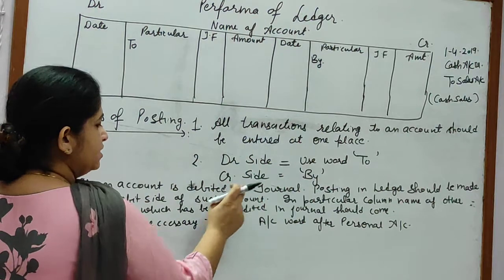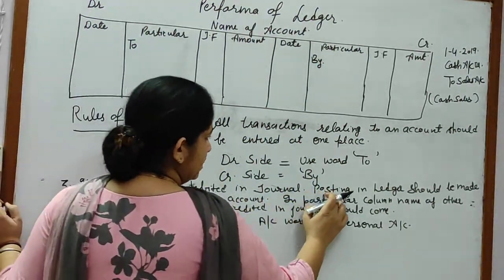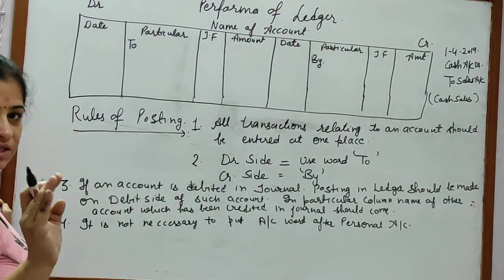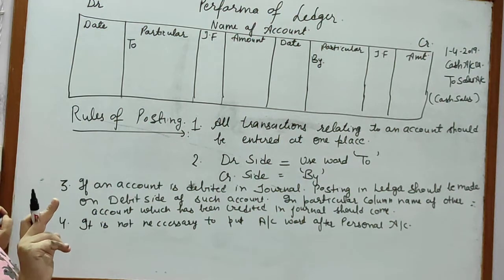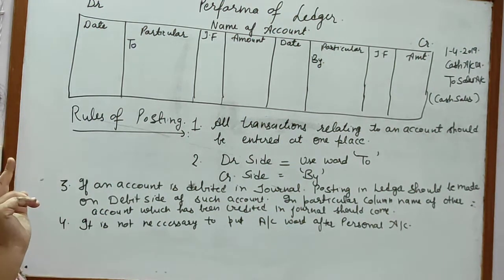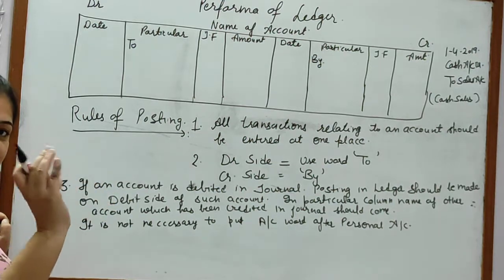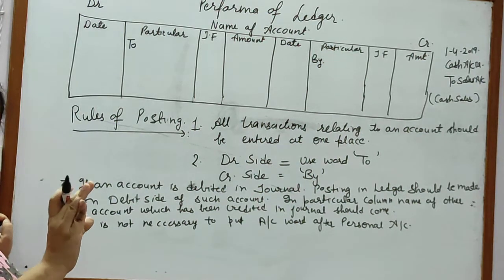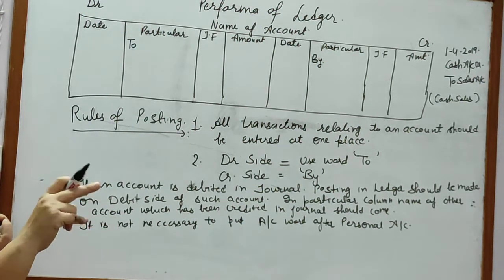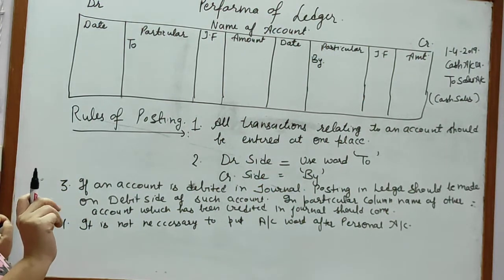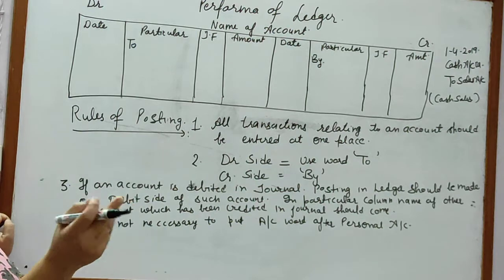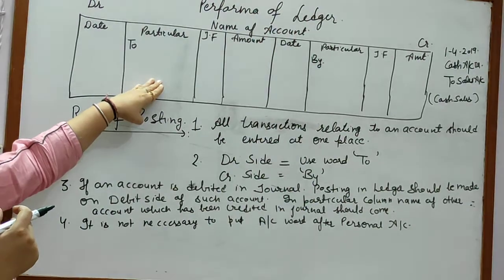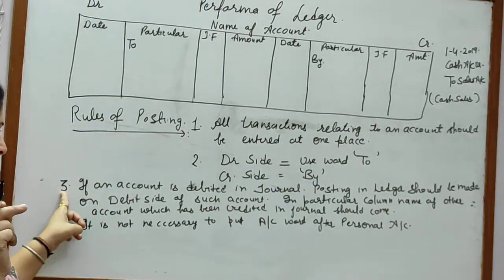If an account is debited in the journal, posting in the ledger should be made on that debit side. Whatever is debit in the journal entry will go to the debit side of the ledger, and whatever is credit in the journal entry will go to the credit side of the ledger. In the particulars column you will write the name of the other account. For example, cash account debit to sales: cash account's debit side will receive the amount, and in the particulars column the name will be 'To Sales Account'.